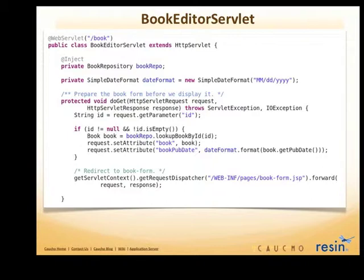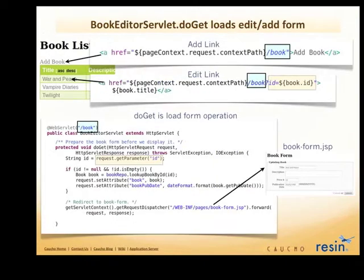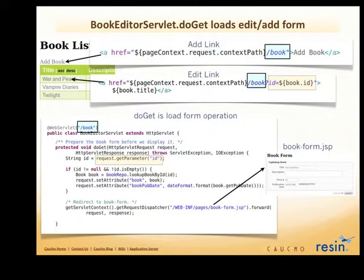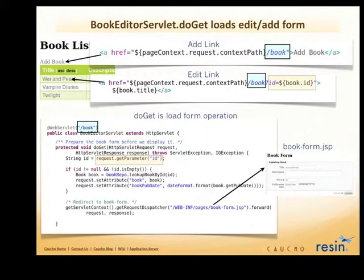Once the book has been loaded, we forward to the book form JSP, and book form JSP actually renders that page. If the book is present, this page will show the data for that book. The add link and the edit link are both mapped to slash book, as is our book editor servlet. These links trigger an HTTP get, and the do-get method handles that. In the URL of the browser, the browser will only see slash book — they'll never see book form JSP because we're doing a forward operation.